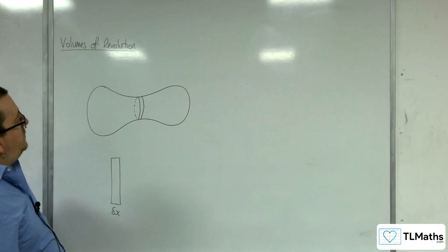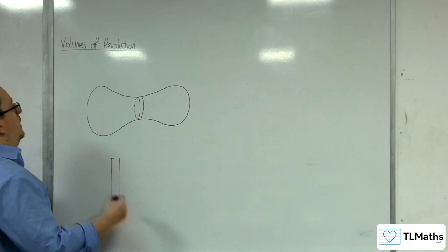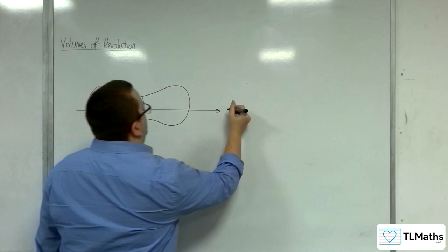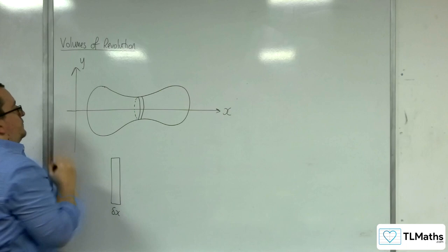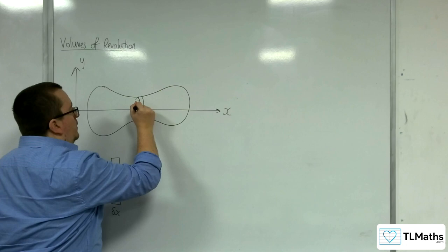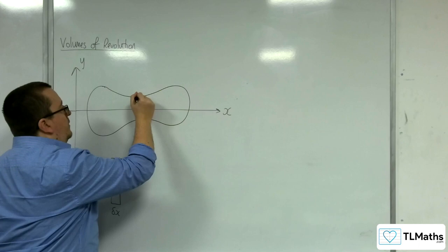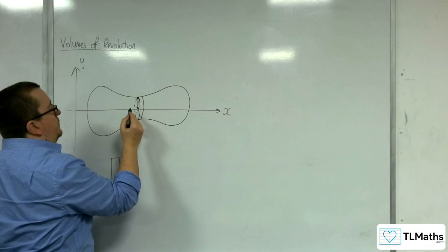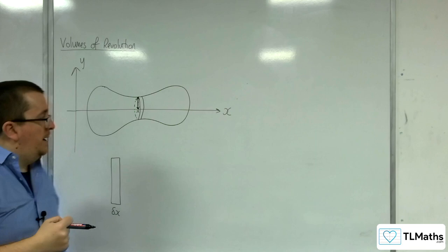So what I need then is the radius of my circle. Now, imagine that this is the x-axis. So here's a y-axis. Then the radius of my circle, that length there, for some position x, the height of the curve will be the radius of my cylinder.